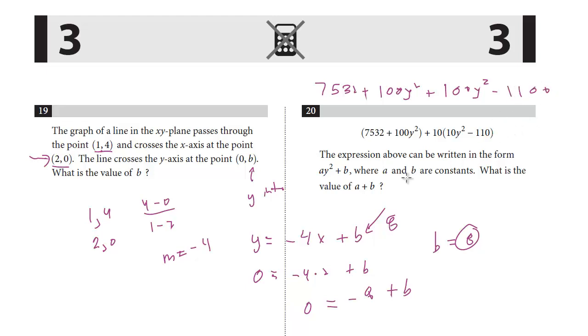Now we combine the terms to get it into the form ay² plus b. We've got two of these 100y² terms, so we end up with 200y². And 7532 minus 1100. Just be careful with arithmetic. Minus 1000 would be 6532, minus 100 more gives us plus 6432.